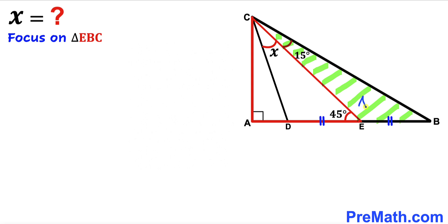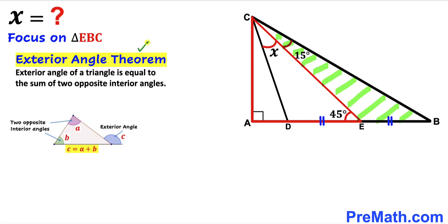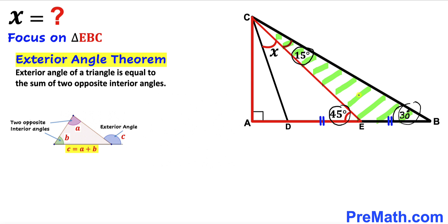Let's focus on triangle EBC and find angle EBC. Recalling the exterior angle theorem: the exterior angle of a triangle equals the sum of the two opposite interior angles. In our case, angle EBC is the exterior angle, so EBC equals 30 degrees, since 15 degrees plus 30 degrees equals 45 degrees.